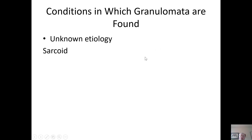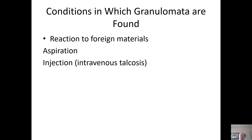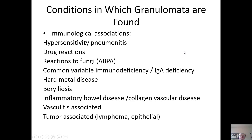There are some conditions of unknown etiology, and sarcoid exemplifies this type of reaction. Granulomata can also be found as a reaction to foreign materials, either inhaled or injected, such as in intravenous talcosis. There are a variety of immunological associations; hypersensitivity pneumonia is probably the most common of all the conditions. When one finds granulomata, you have to consider all of these, and that's why history is very important.